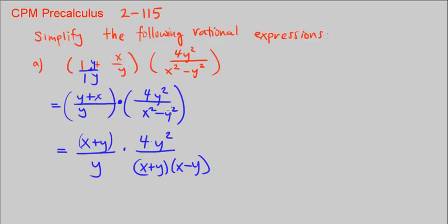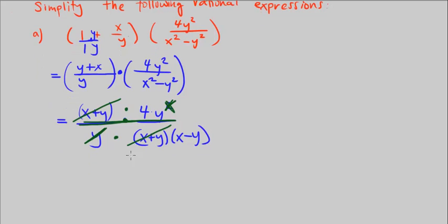The difference of two squares — we're subtracting two squared terms. Now when we're multiplying, we're going to multiply across making this one big fraction, and any terms in the numerator that are the same as the denominator can be canceled out. So x plus y cancels, and this y cancels with one of the y's here so it's no longer squared. That leaves us 4y over x minus y. Let's box our answer — this is the simplified expression for Part A.